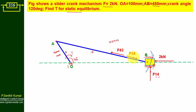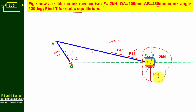There are two forces F34 and F43 — both are equal in magnitude but opposite in direction. F34 represents the force offered by the connecting rod on the slider, whereas F43 represents the force offered by the slider on the connecting rod. When drawing the free body diagram of the slider, the force must act on the slider, so we use F34. When drawing for the connecting rod, we use F43.